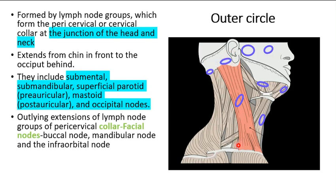The parotid lymph nodes can be further divided into superficial and deep, where the superficial ones lie over the gland and the deep ones are embedded within the gland. The submandibular lymph nodes are similar — some lying over the gland and some embedded within it. Finally, the submental lymph nodes lie below the chin, over the mylohyoid muscle, between the two anterior bellies of the digastric muscle.